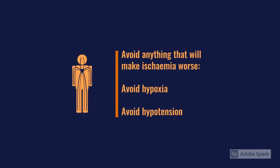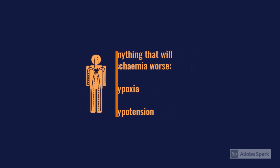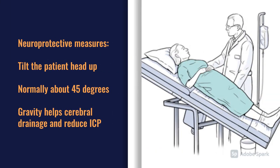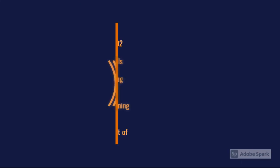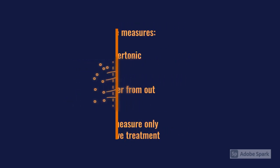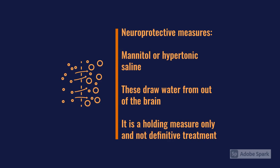In terms of medical management, you want to avoid anything that's going to make someone more ischaemic — avoid hypoxia, avoid hypotension, and maintain that cerebral perfusion as best you can. Throughout the assessment, keep an eye on raised intracranial pressure signs. You can sit someone up or tilt them head-up, which helps reduce intracranial pressure through gravity. Rapid sequence induction and ventilating the patient to lower CO2 levels is another option. Mannitol or hypertonic saline can help pull water out of the intracranial space back into the vascular system, reducing intracranial pressure.